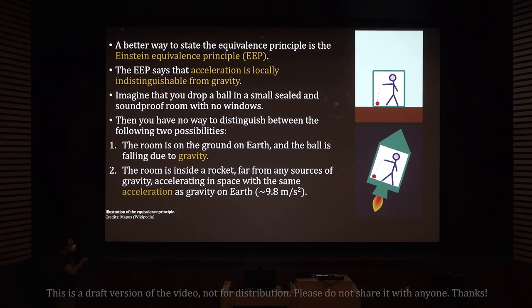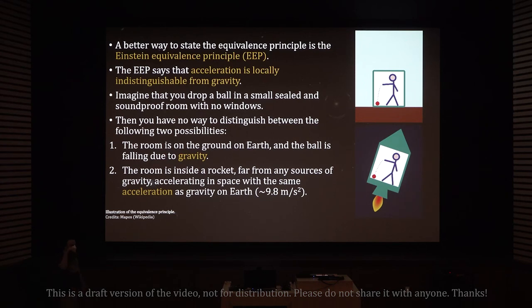In both cases, what happens is exactly the same. Even if you're inside an accelerating rocket and drop the ball, it falls to the ground at exactly the same speed, the same way, and the same direction as if you were on the surface of Earth. You have no way to distinguish between these two cases.